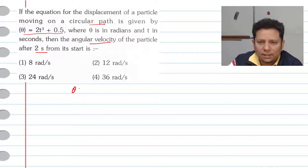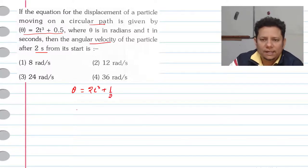So yahaan peh aapne ko theta diya hua hai. Theta is equal to 2t³ plus 0.5, isko half likh leta hai. Yeh aapki theta ki value hai.